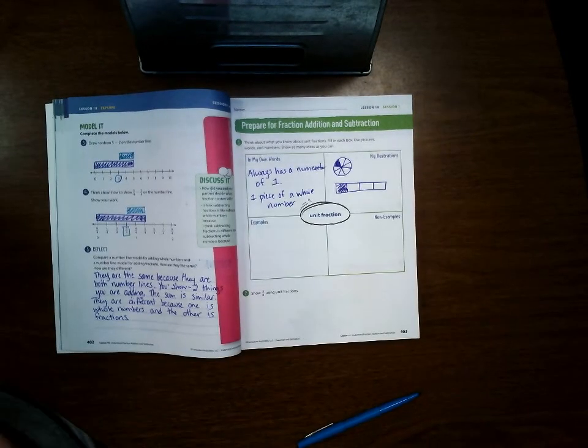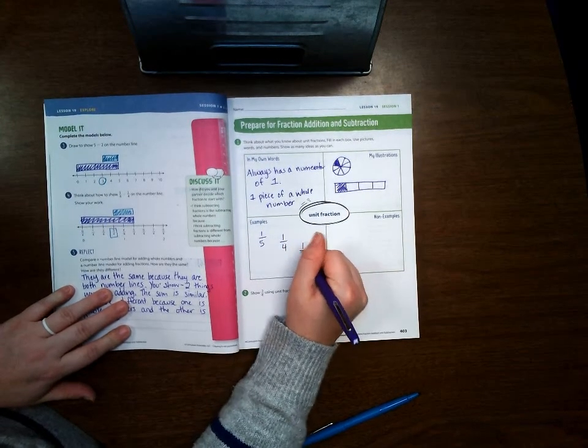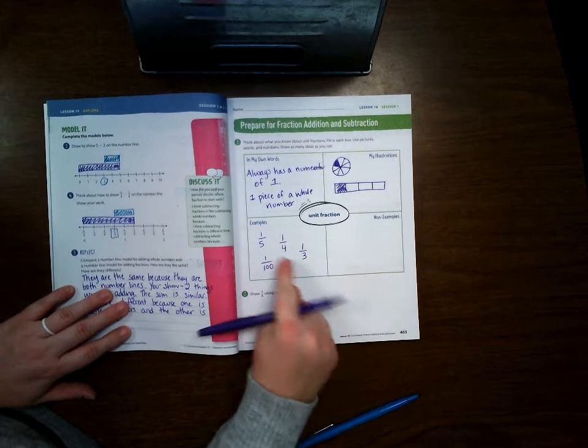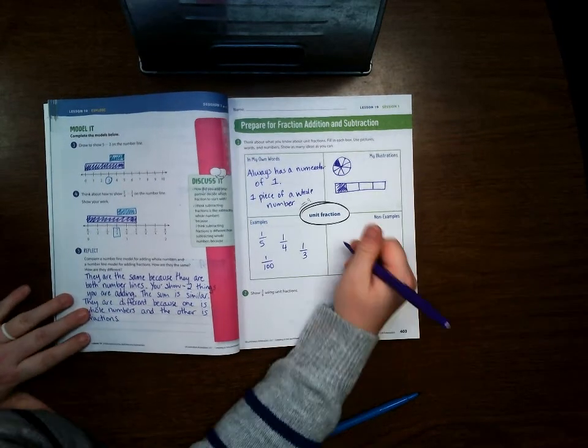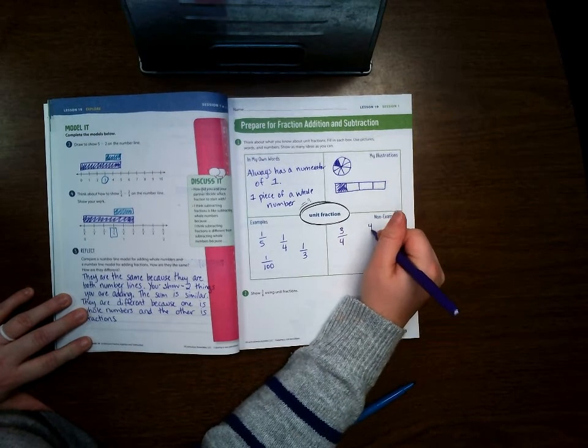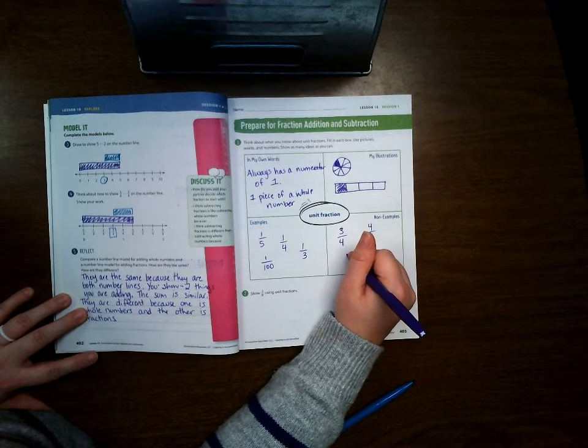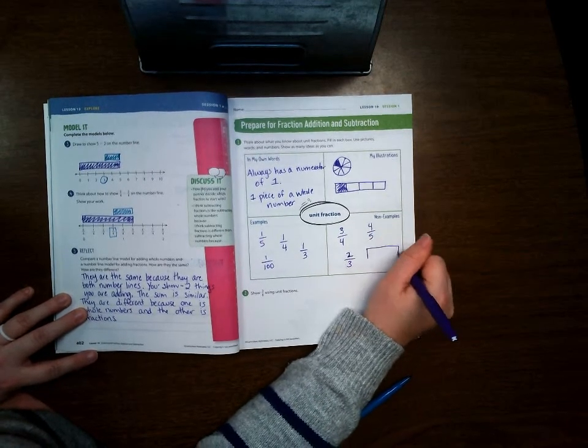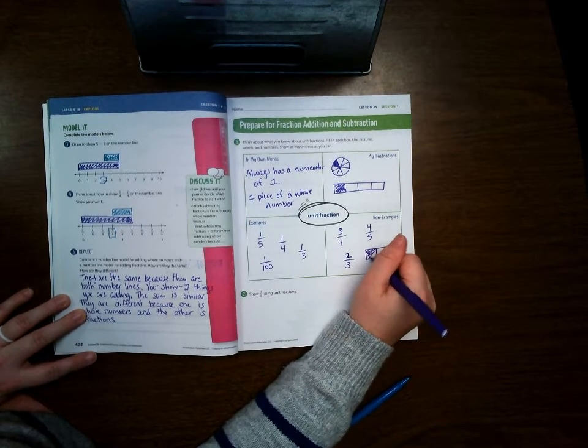So some examples would be like 1/5, 1/4, 1/3, 1/100, just anything that has a 1 at the top would be some examples. And non-examples would be like 3/4, 4/5, 2/3, or if you're using a model, having more than one shaded.